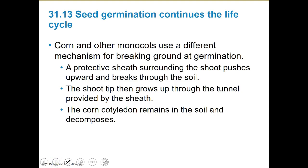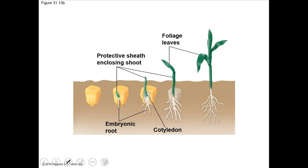Corn and other monocots are a little different. They have a protective sheath surrounding the shoot that pushes upward and breaks through the soil. The shoot tip then grows up through the tunnel provided by the sheath, and the corn cotyledon remains in the soil and decomposes. The shoot can come up directly and the roots go down directly, kept protected until it's ready. The monocot is kind of a direct up-and-down, whereas eudicots have this hooked situation.